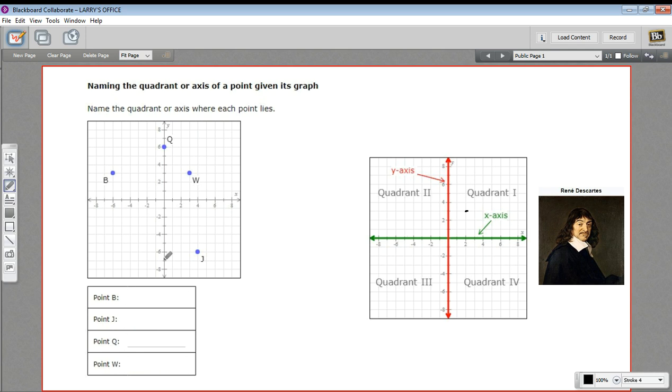So I think that's all the information we need to know to answer these questions. It says, name the quadrant or axis where each point lies, and we're going to start with point B. So B is not on an axis. It's not on one of these lines here. So it's in this quadrant, and we know that's quadrant 2 because we start in the upper right, and we go counterclockwise. This is 1, this is 2. So this is quadrant 2.